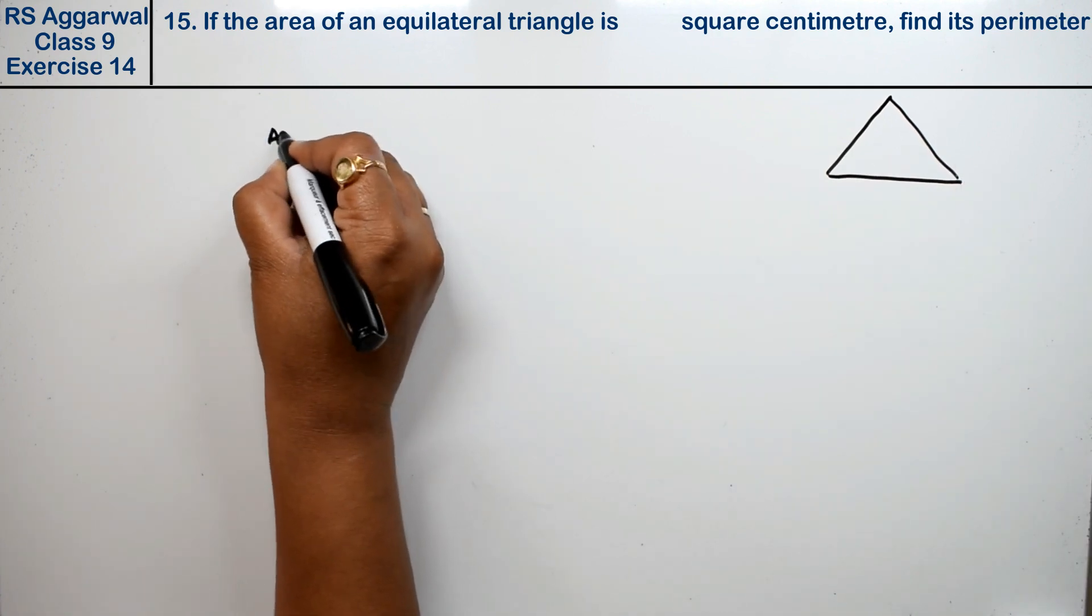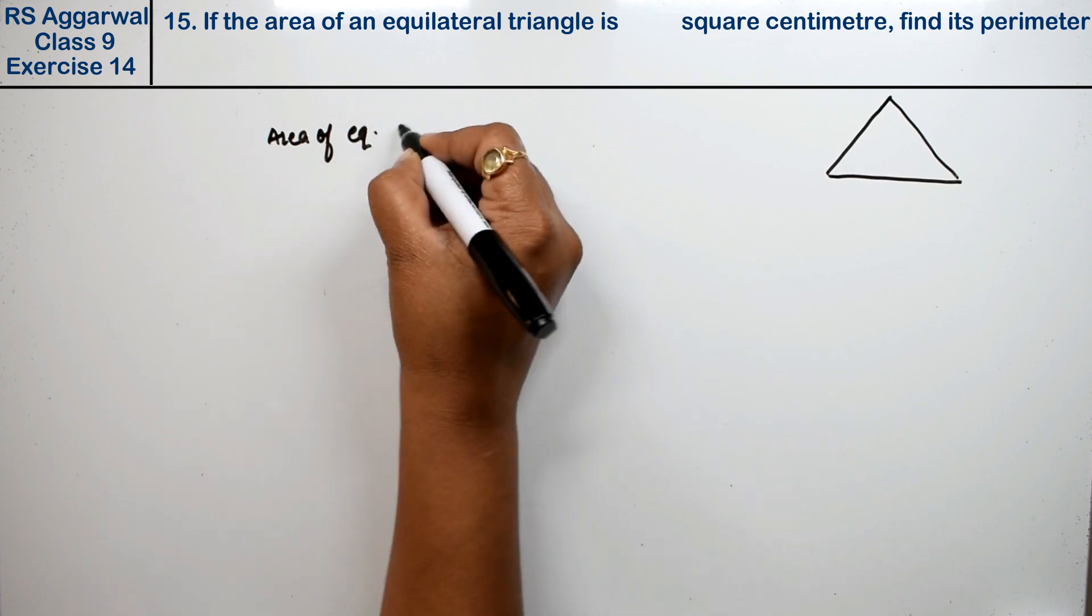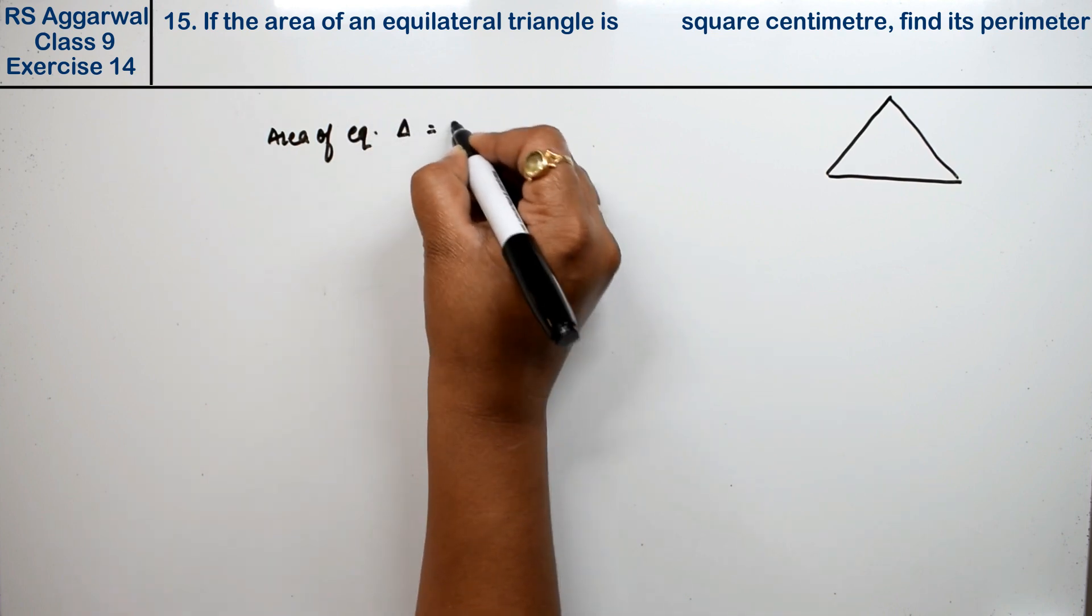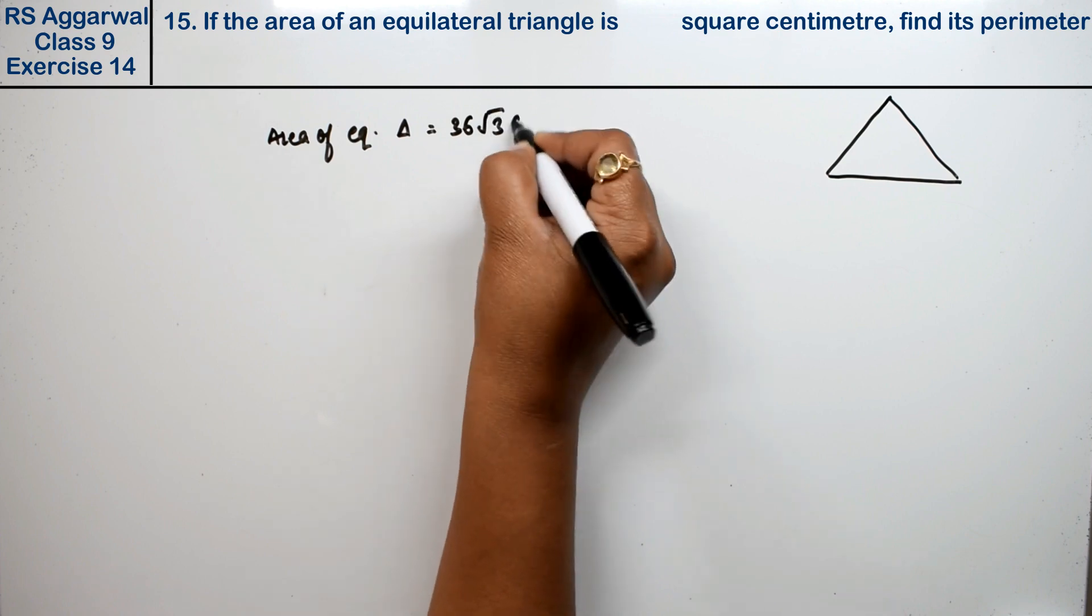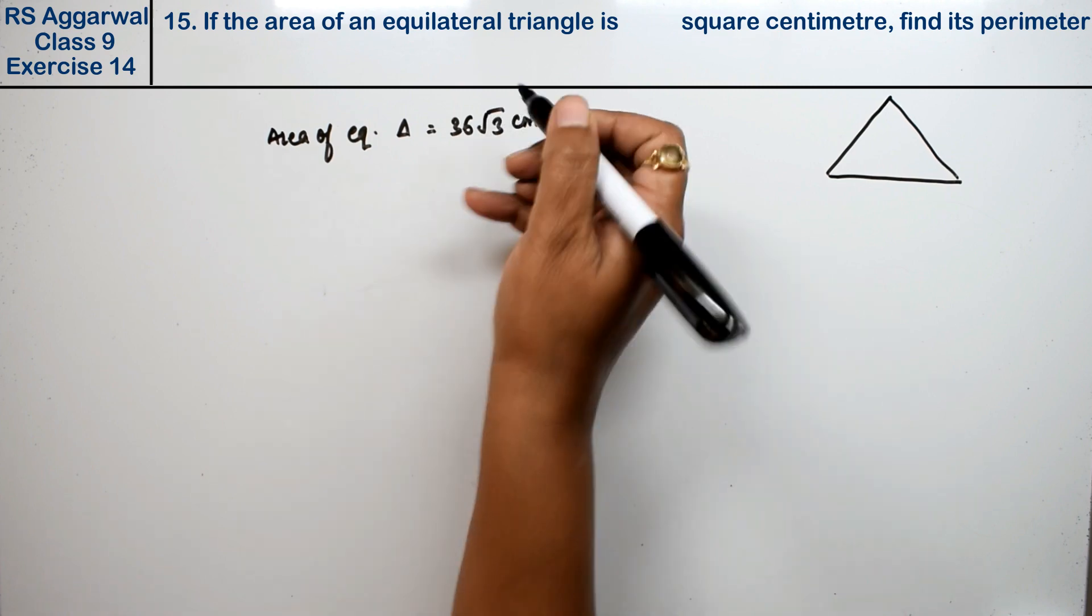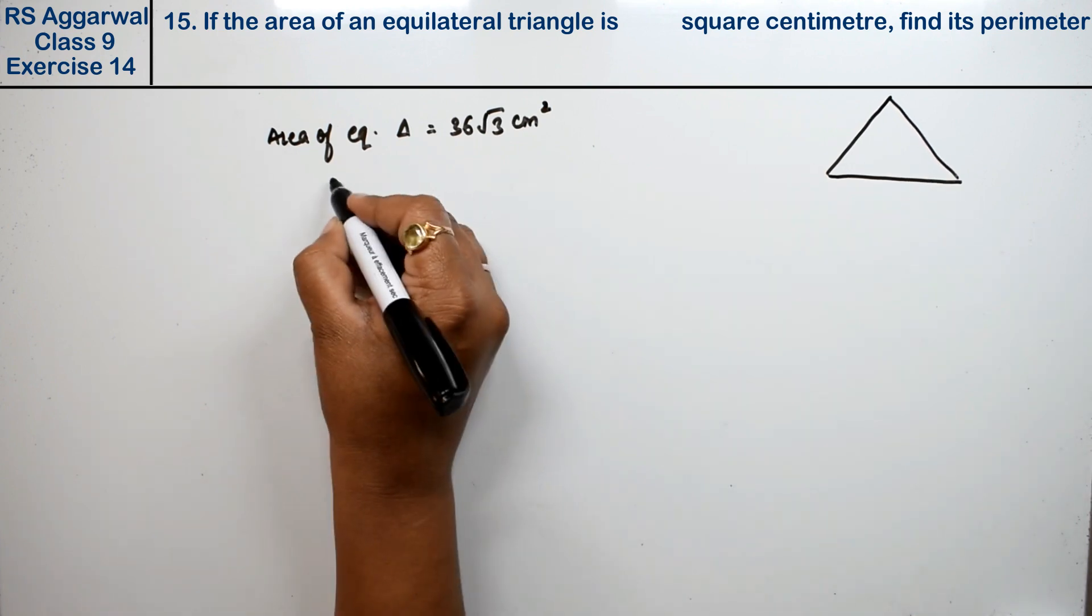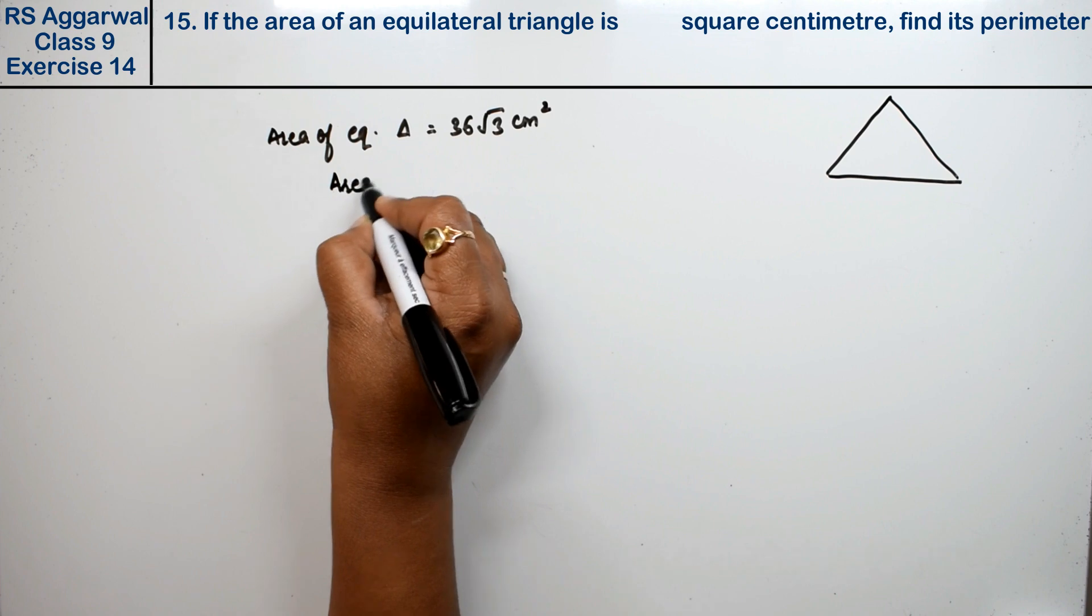The area of equilateral triangle is 36 root 3 cm² and we have to find its perimeter. So how do we find it? First we need to use the formula.